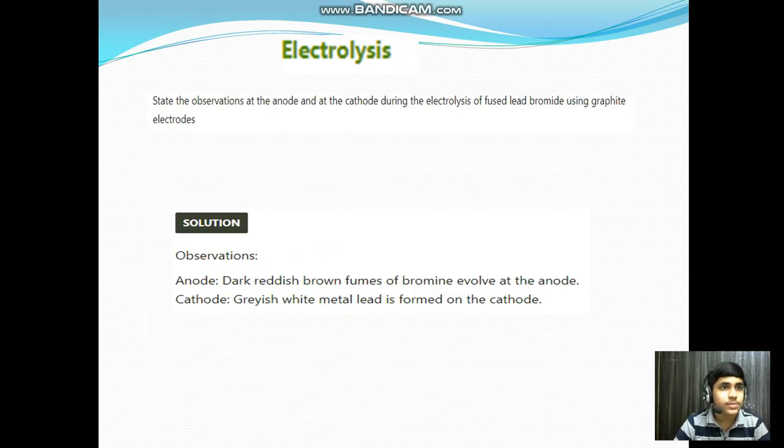Chapter: Electrolysis. State the observations at the cathode and at the anode during the electrolysis of fused lead bromide using graphite electrodes. Solution: Observations - At anode, darkest red-brown fumes of bromine evolve. At cathode, grayish-white metal lead is formed.